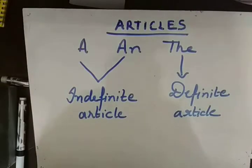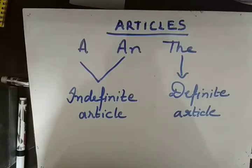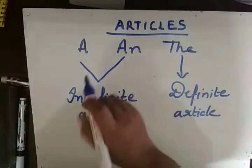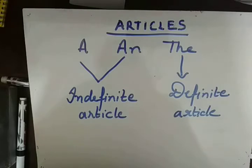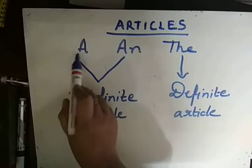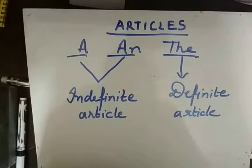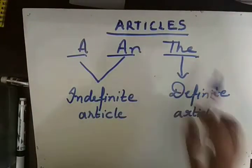Hello and welcome to all. Today we are going to learn about articles. We had already learnt the uses of A and AN for UKG class and class 1. This is the syllabus of class 2 to class 5, that is primary classes syllabus. The articles are of 3 kinds: A, AN and THE. So let's start with the articles A and THE.